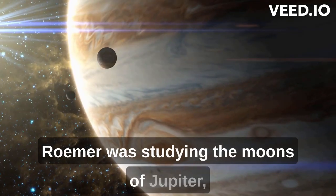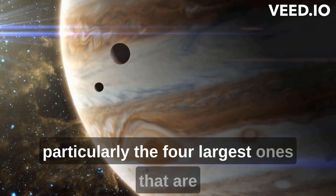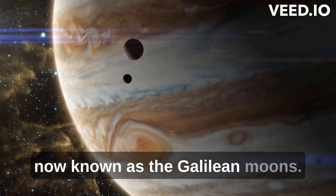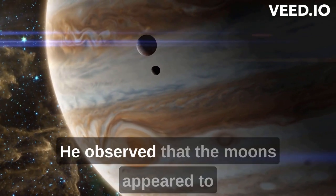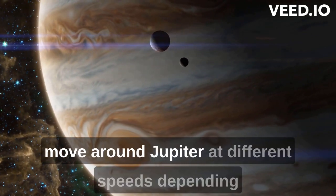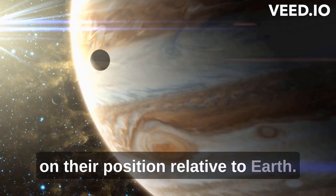Roemer was studying the moons of Jupiter, particularly the four largest ones that are now known as the Galilean moons. He observed that the moons appeared to move around Jupiter at different speeds, depending on their position relative to Earth.